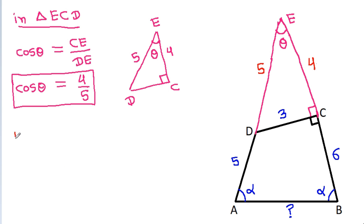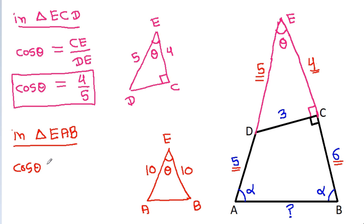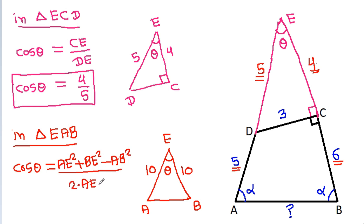Now in triangle EAB, angle at E is also theta. AE equals AD plus DE equals 5 plus 5 equals 10, and BE equals BC plus CE equals 6 plus 4 equals 10. Using the law of cosines, cos theta equals AE squared plus BE squared minus AB squared, divided by 2 times AE times BE.